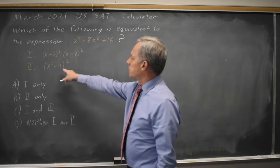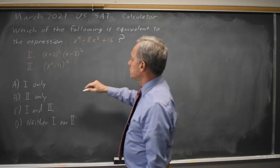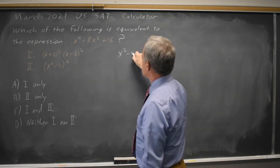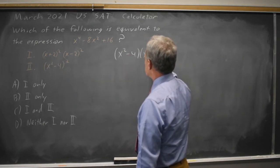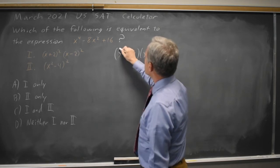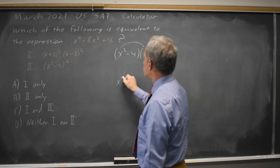We can check the FOIL on choice 2. x squared minus 4 times x squared minus 4. First times first is x squared times x squared is x to the fourth.